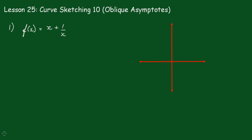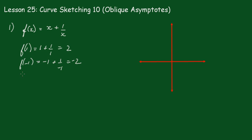Lesson 25: curve sketching, oblique asymptotes. We check to see if this is an odd function. f(1) = 1 + 1/1 = 2, and f(-1) = -1 + 1/(-1) = -2. Yes, it is odd — f(-1) equals -f(1).